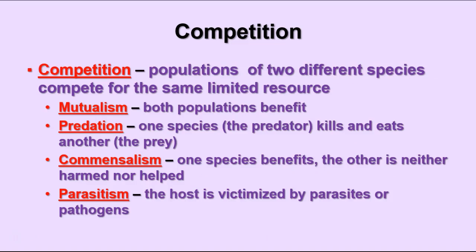There are various kinds of interactions that can occur within environments. In mutualism, both populations benefit from the relationship. In predation, one species kills and eats another — the predator kills the prey. Commensalism is when one species gets some benefit from the relationship while the other is neither harmed nor helped. Parasitism is when a host is victimized by parasites or pathogens.